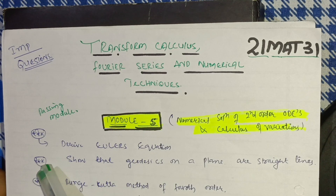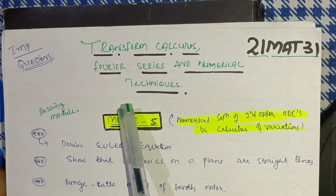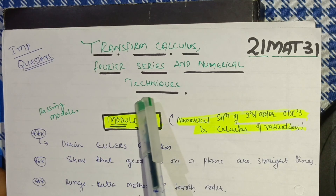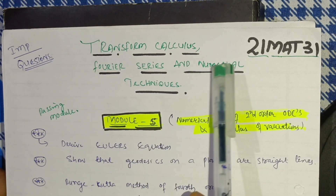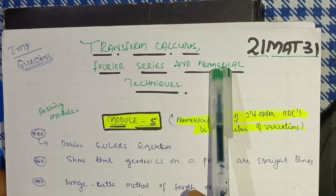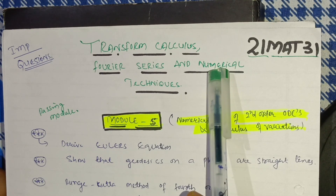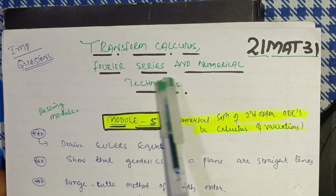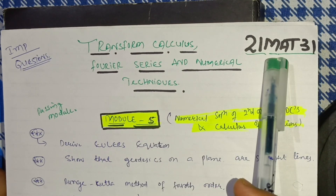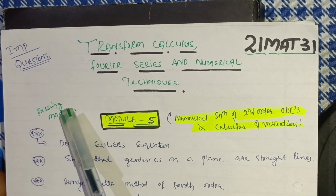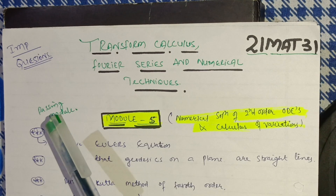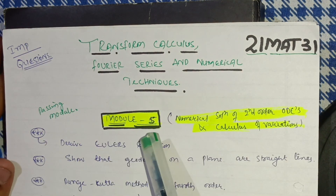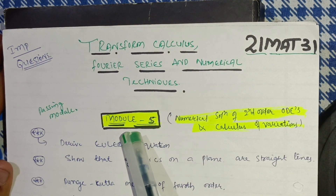Hello everyone, welcome back to my channel. Today I will try to sort out some passing hacks and passing strategies for the subject Transform Calculus, Fourier Series and Numerical Techniques — the mathematics subject for third semester students, especially backlog students. Most students have a backlog in this subject, which has subject code 21MAT31. Without wasting time, let me start.